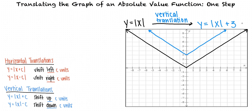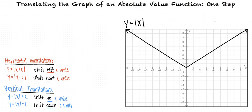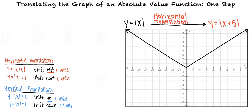Great job! Now let's go back to the original graph y equals the absolute value of x. How would we translate this to get the graph of y equals the absolute value of x plus 5? The 5 is inside the absolute value sign, so this is a horizontal translation. Also, since it's plus 5, we have to translate the graph 5 units to the left.